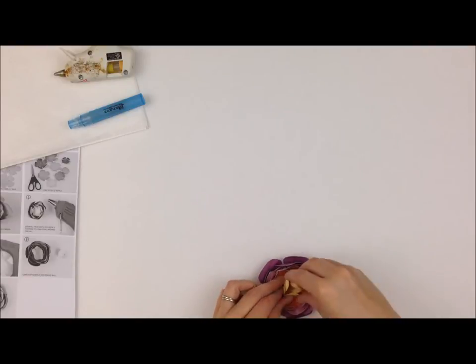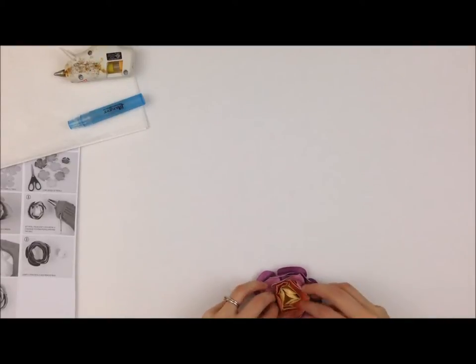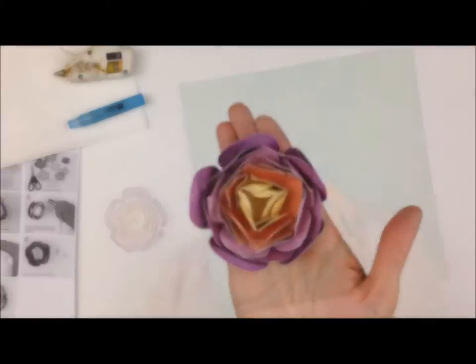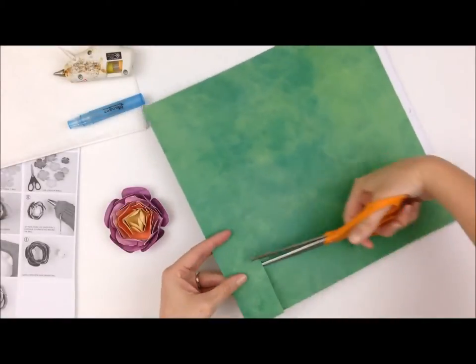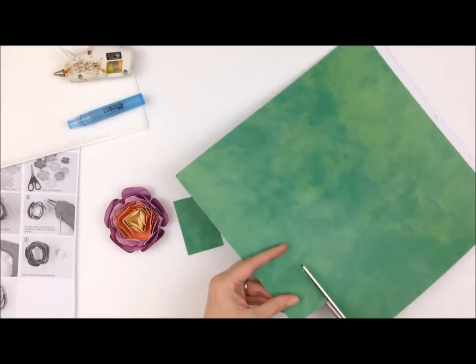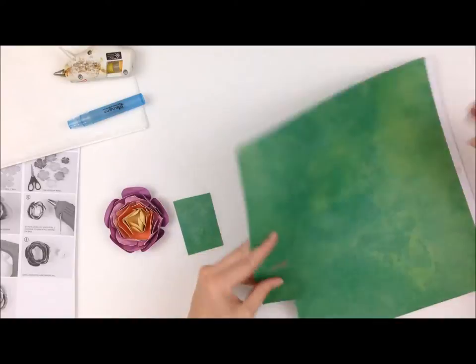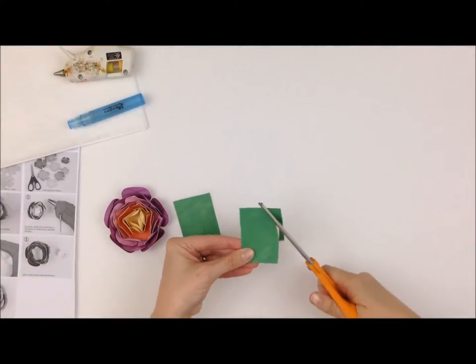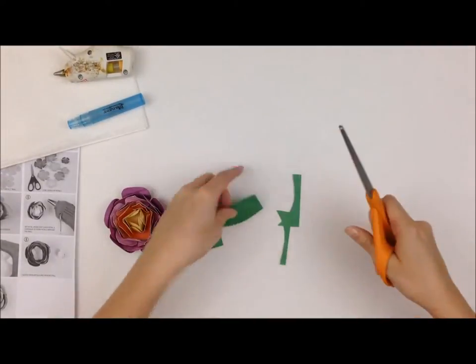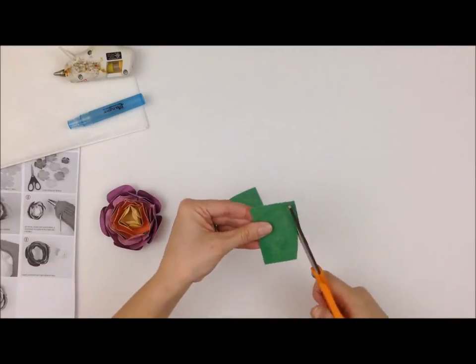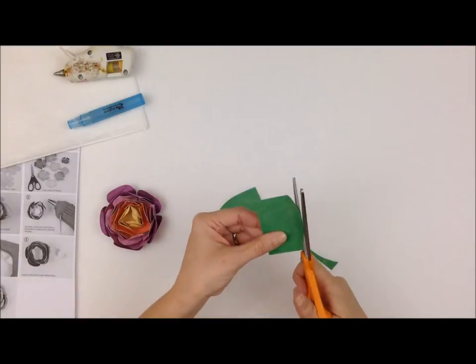The next thing we're going to do is add leaves. So I got out some green paper and there's no leaf template for this flower but that's okay because I just want to do a very basic leaf shape. And what I love about these patterned papers is that they're double-sided. So one of these leaves will show the A side and the other leaf will show the B side.